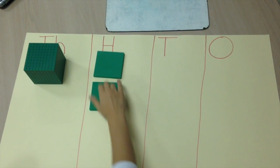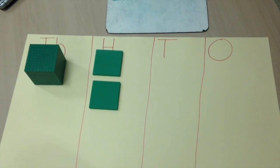I'm going to start in the hundreds place. I already have two hundreds here, and I'm going to add nine hundreds.